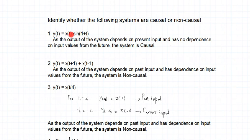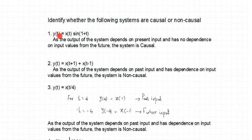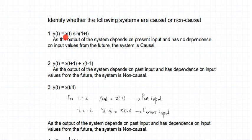Where is the input term? The input term is only x(t). So y(t) is dependent on the present value of the input. There is no future term. When searching for causal or non-causal, search for future input values. If there is no future value, the system is causal. As the output depends on the present value of the input and has no dependence on future input values, the system is causal.